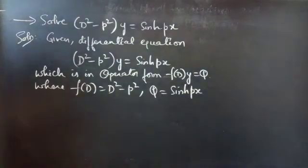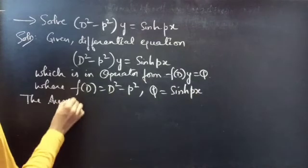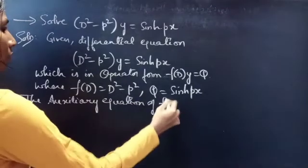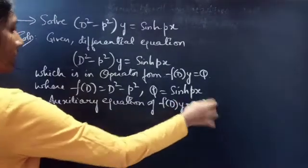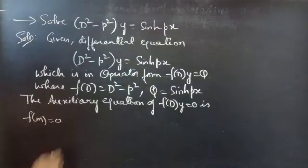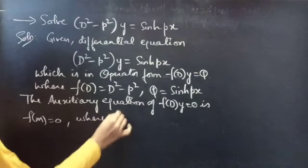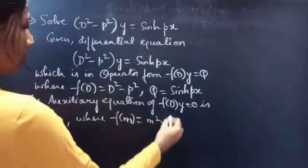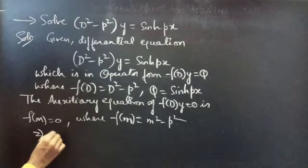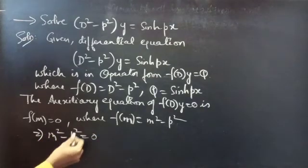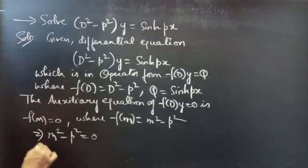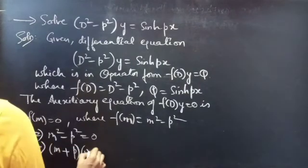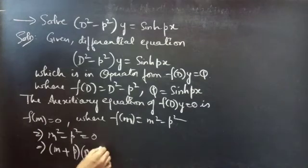To find the complementary function, we use the auxiliary equation. The auxiliary equation of f(D)·y = 0 is f(m) = 0. Replacing the operator D by m, we get f(m) = m² - p². So the auxiliary equation becomes m² - p² = 0, which is in the a² - b² form, factoring as (m + p)(m - p) = 0.